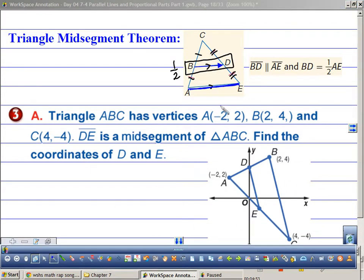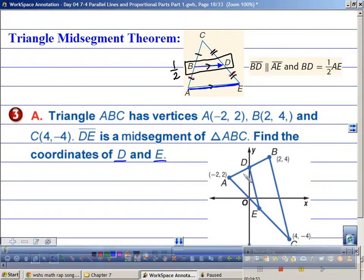So let's look at this here. Triangle ABC has vertices, blah, blah, blah. We have the vertices here. Find the coordinates of D and E. So I need to find the coordinates of this one and of this one. It tells me that this is a midsegment. Just from my definition right now, what does a midsegment mean?